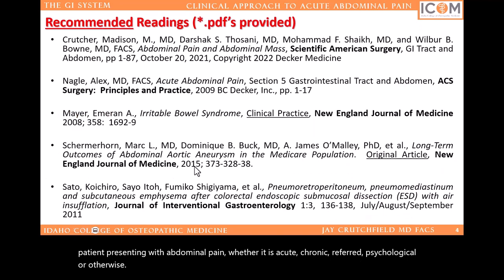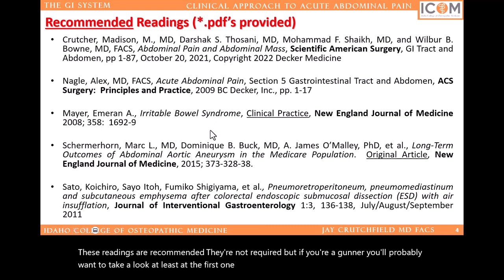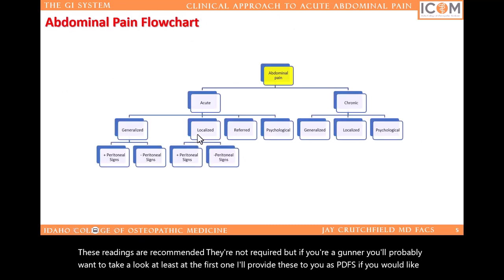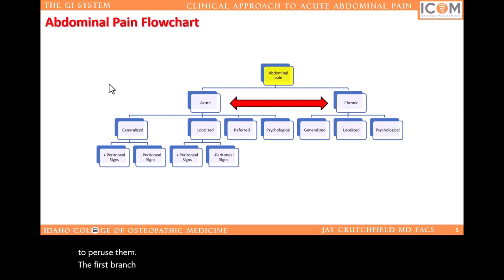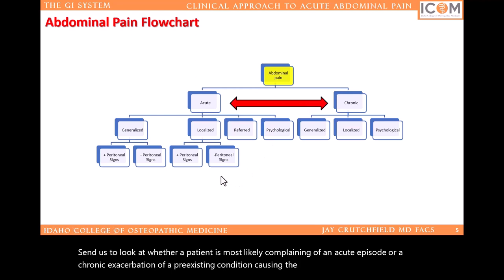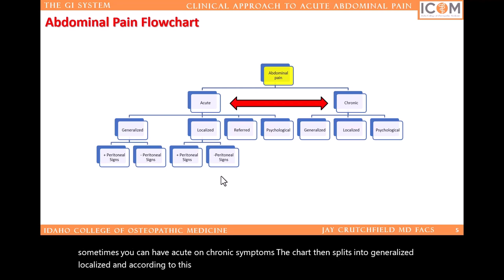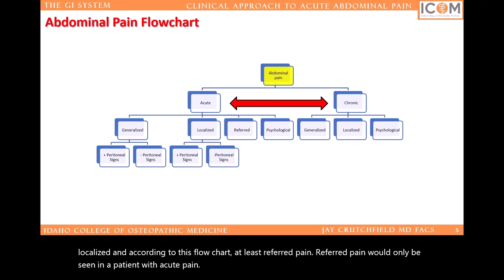These readings are recommended, not required, but if you're a gunner you'll probably want to take a look at least at the first one. I'll provide these to you as PDFs if you would like to peruse them. The first branch point of this flow chart — please do not memorize these flow charts — sends us to look at whether a patient is most likely complaining of an acute episode or a chronic exacerbation of a pre-existing condition causing the patient's discomfort, and sometimes you can have acute on chronic symptoms. The chart then splits into generalized, localized, and referred pain. Referred pain would only be seen in a patient with acute pain — I'm not sure this is completely true.